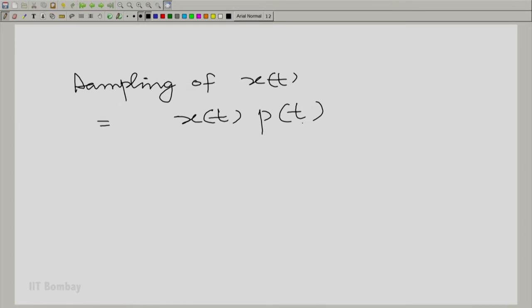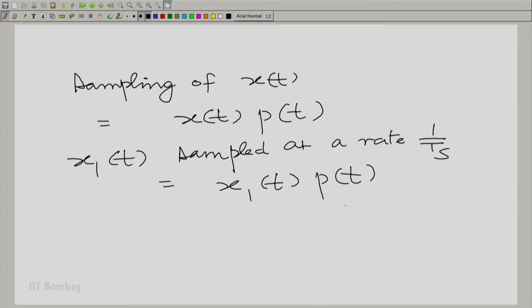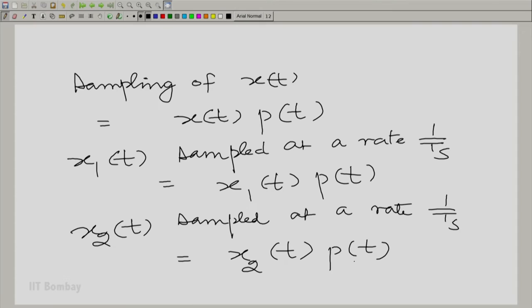And therefore, if x1(t) is sampled—of course, we are talking about the same sampling rate—sampled at a rate 1/Ts is essentially x1(t) times p(t). Similarly, x2(t) sampled at 1/Ts is the product of x2(t) and p(t).